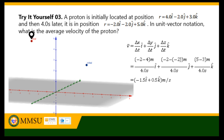For the x-component: negative 2 minus 4, divided by 4 seconds, equals negative 1.5 meters per second i-hat. For the y-component: negative 2 minus negative 2, divided by 4 seconds, equals 0 j-hat. For the z-component: 5 minus 3, divided by 4 seconds, equals 0.5 k-hat. So the average velocity of the proton is negative 1.5 i-hat plus 0.5 k-hat.